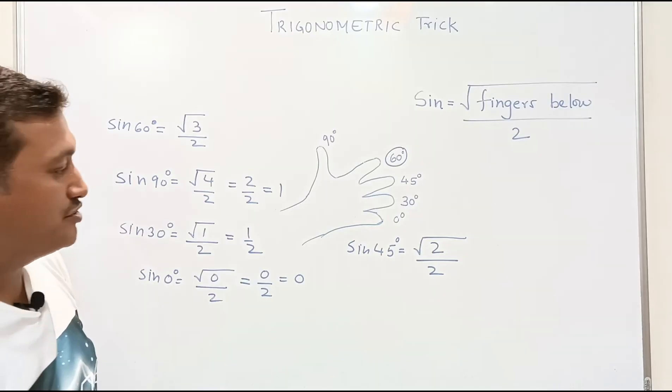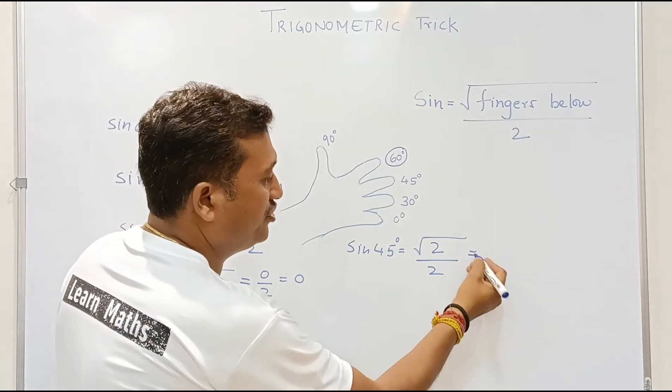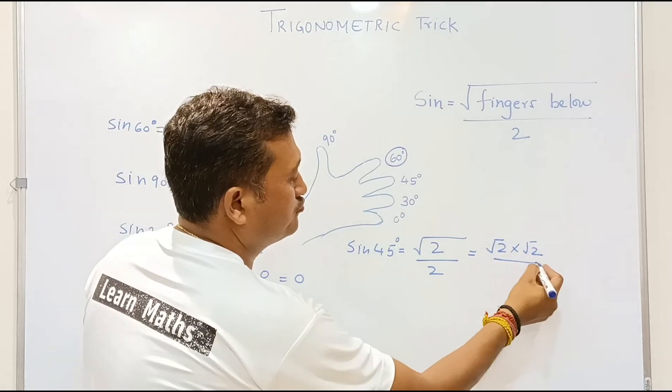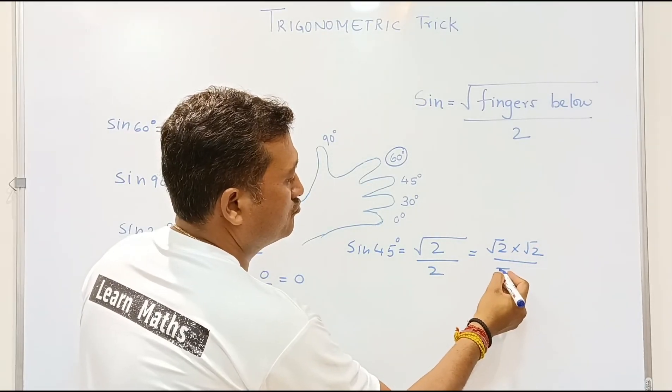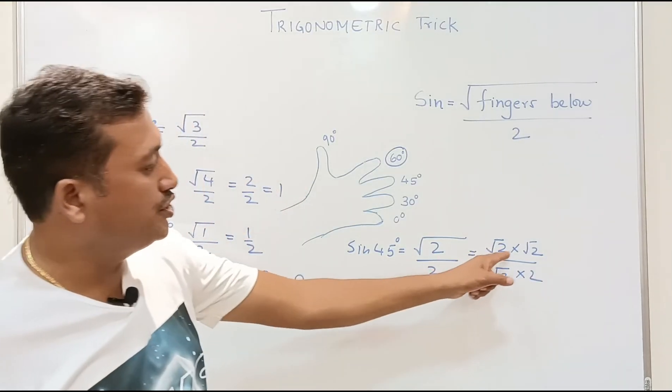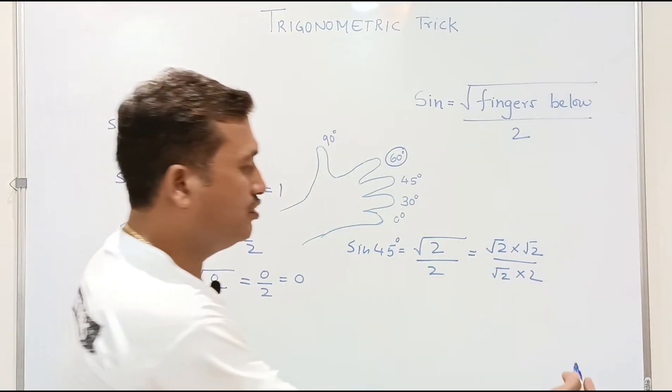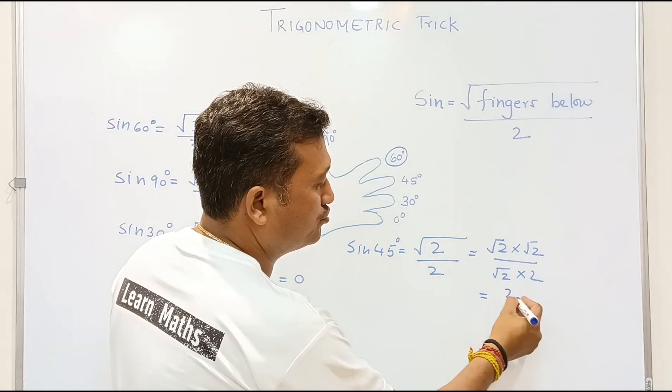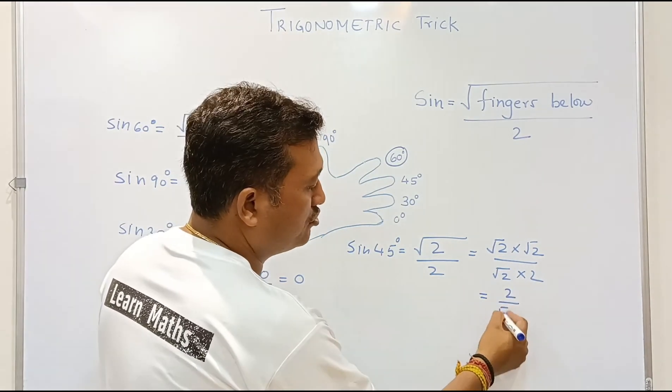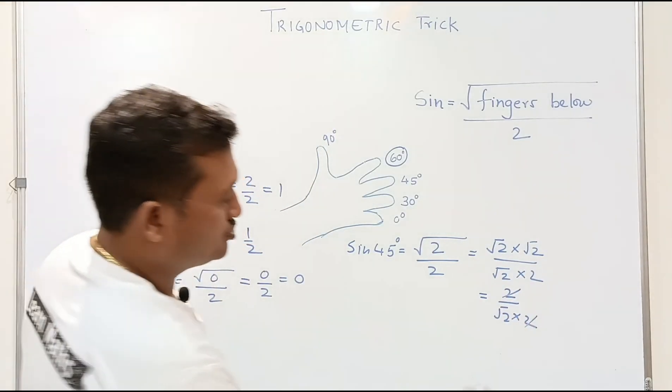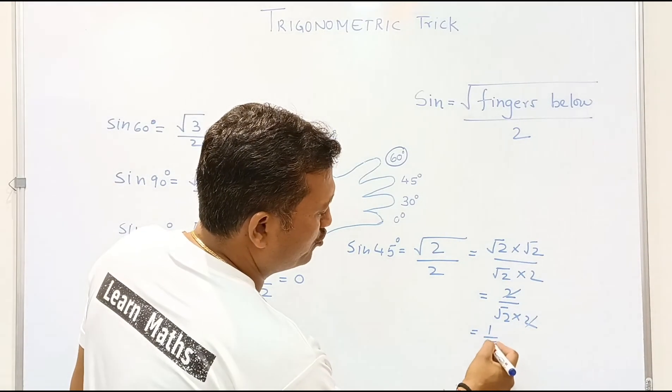Now square root of 2 can be simplified further. We need to multiply numerator and denominator by root 2. Root 2 times root 2 will be root 4, and root 4 is 2. 2 over root 2 times 2, and this 2 will get cancelled. So the answer will be 1 over root 2.